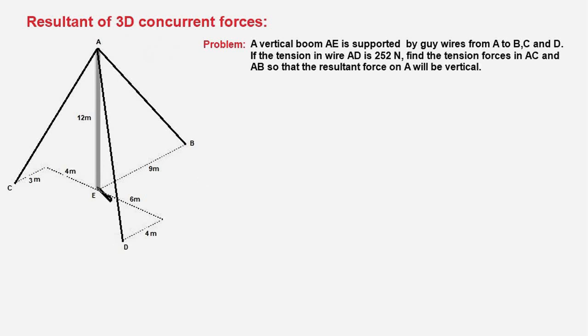and AD. The ends B, C, D of the wires are bolted to the ground and the tension in wire AD is 252 Newtons. We have to find the tension in wires AB and AC so that the resultant of all three forces acting at point A due to the tension in the wires is vertical.